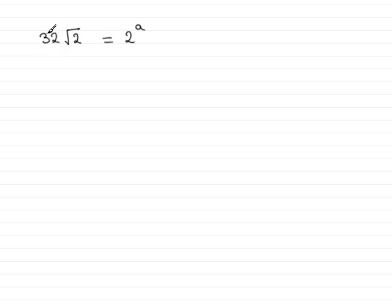Well, this is 2 to the power 5. So we can say that 32 root 2 is equal to 2 to the power 5. That's 32.